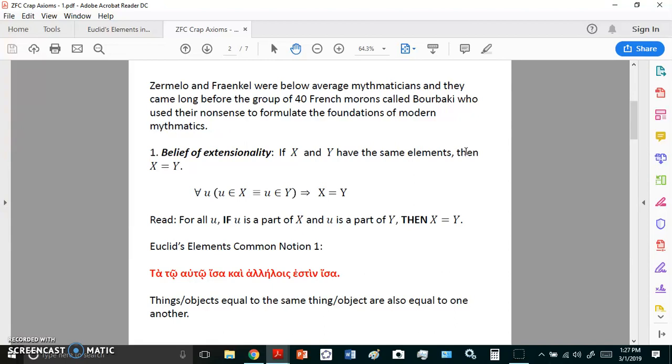So what does the first belief say? It's called the belief of extensionality. It says if x and y have the same elements then x equals y, and what you see right in the middle of the page there is the statement written in what's called FOL or first order logic.